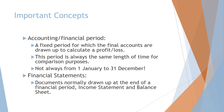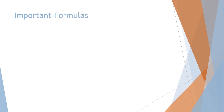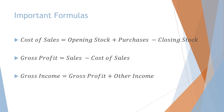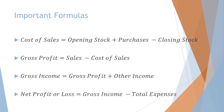Financial statements are documents normally drawn up at the end of a financial period — the income statement and balance sheet. Important formulas you need to know: cost of sales equals opening stock plus purchases minus closing stock; gross profit equals sales minus cost of sales; gross income equals gross profit plus other income; and net profit or net loss equals gross income minus total expenses.